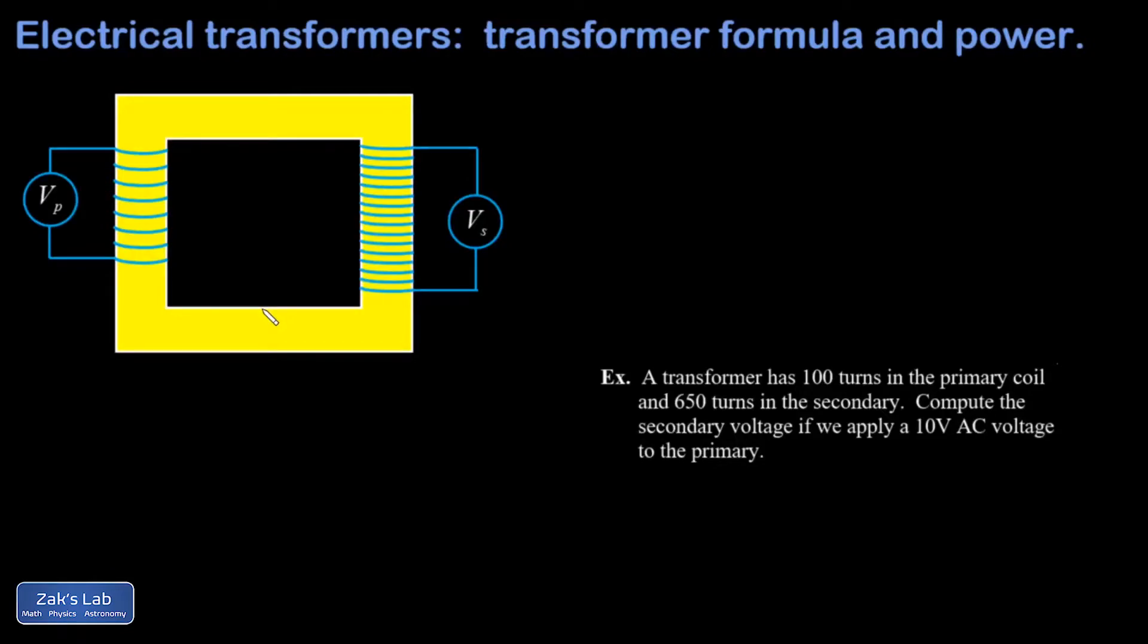In this video, we introduce the idea of an electrical transformer and how it works qualitatively. Next, we derive the transformer formula relating the input and output voltage, and we work a related example. Finally, we look at power in and power out for the transformer, and this allows us to relate the current input to the current output, and we'll work a related example for that as well.